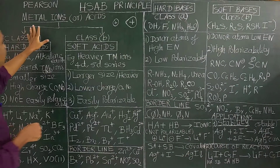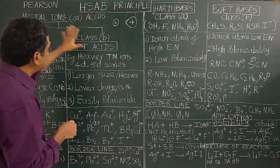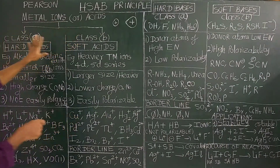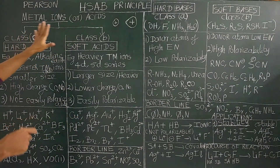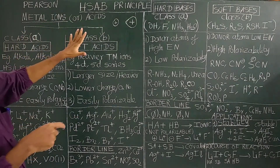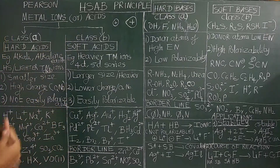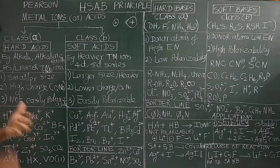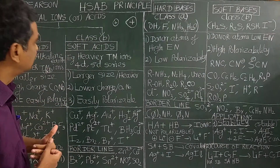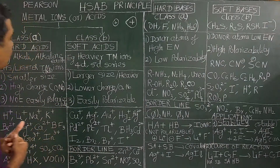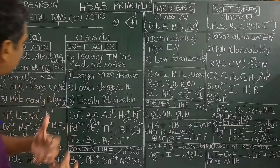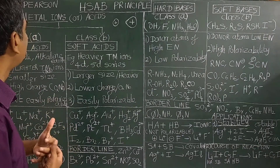Metal ions are acids because they accept electron pairs. According to Lewis theory, they accept electron pairs.